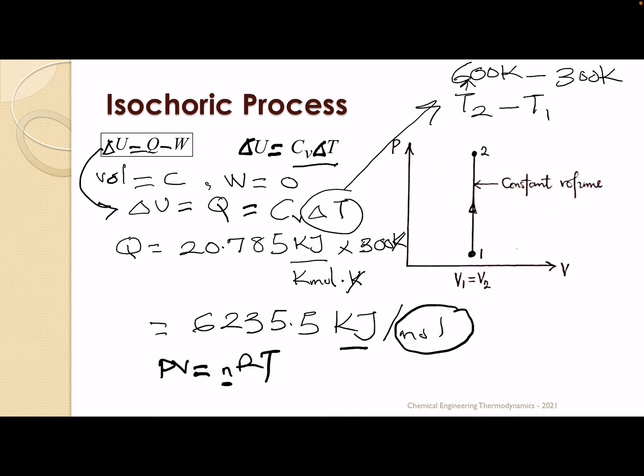Let's not miss this diagram. To understand the processes better, we draw the PV relationship — pressure P on one axis, volume on the other. Remember, it's isochoric, so volume is constant. If you pick a value of volume, the pressure changes from state 1 to state 2, but volume does not change, so V1 equals V2. It is always good to draw this diagram to visualize what is happening.